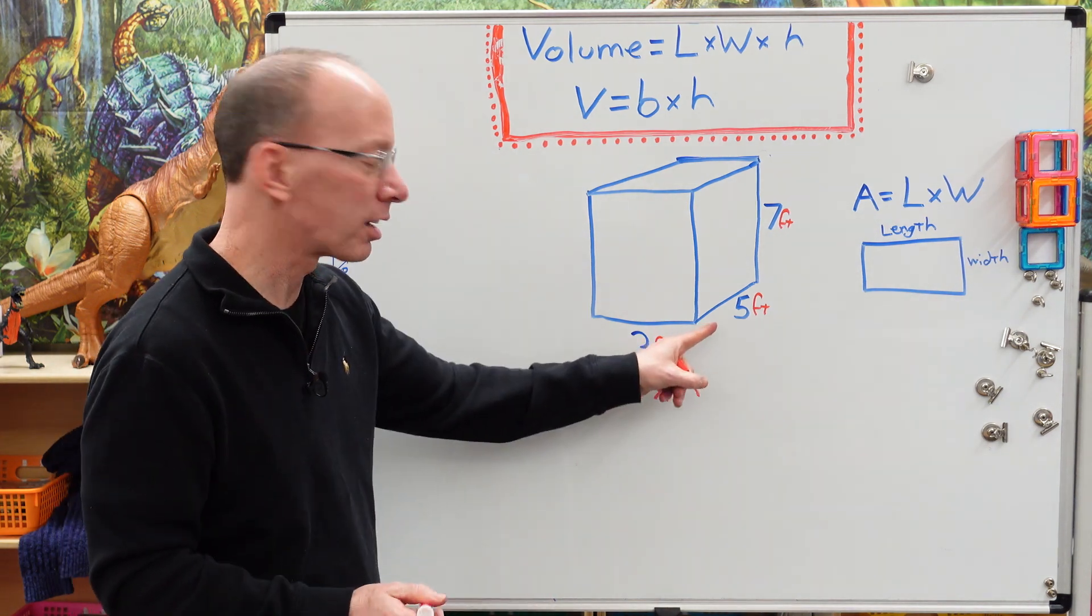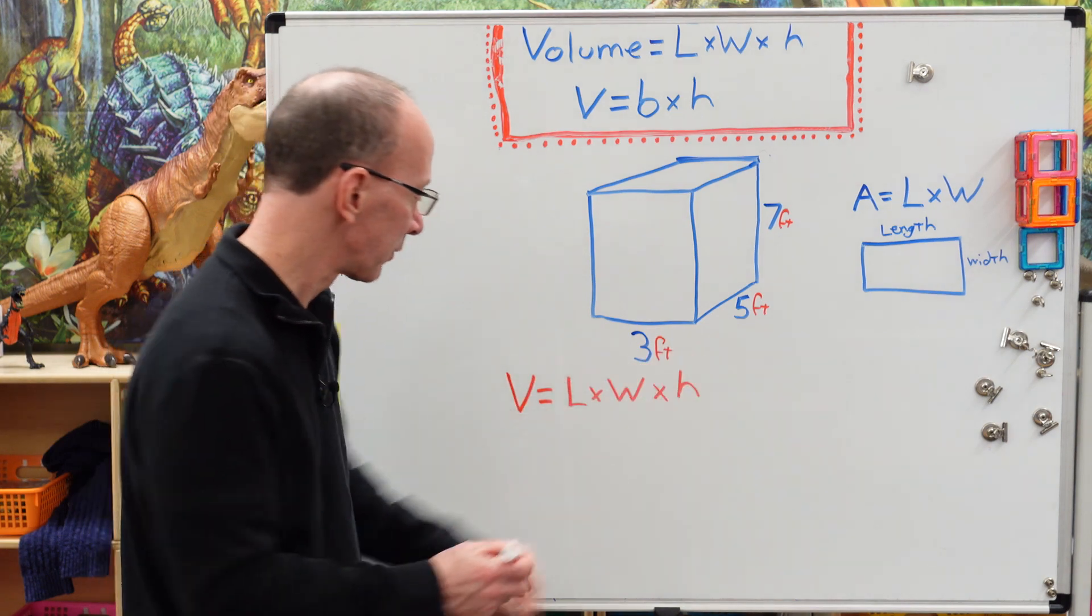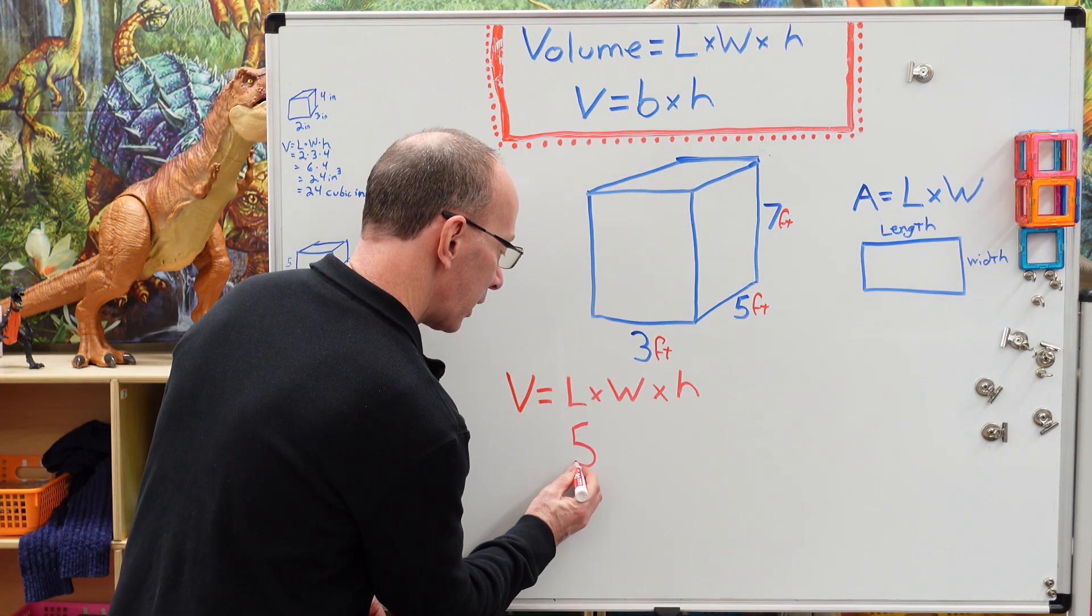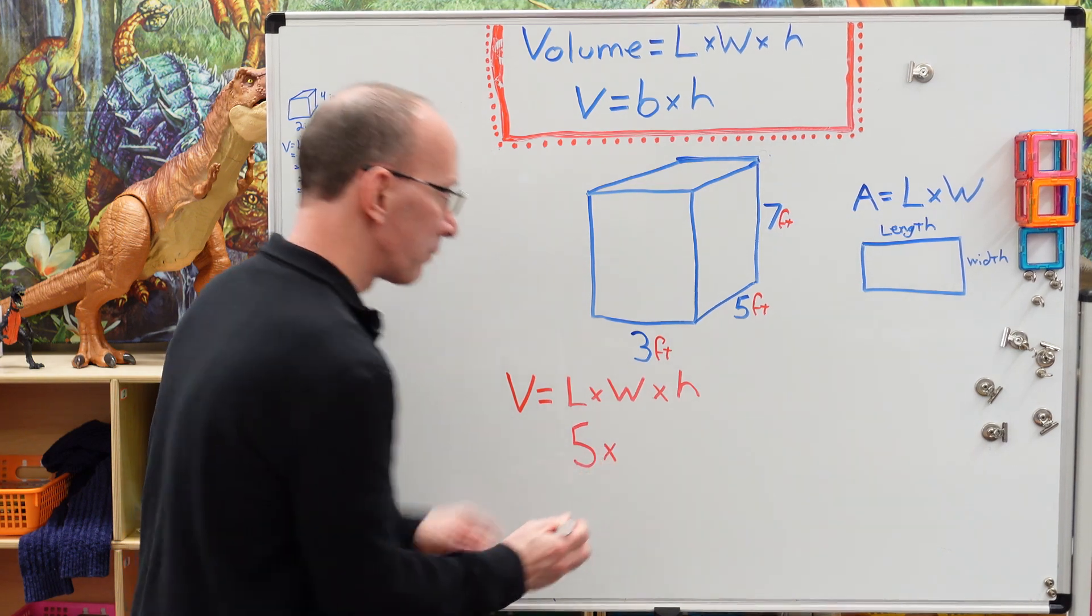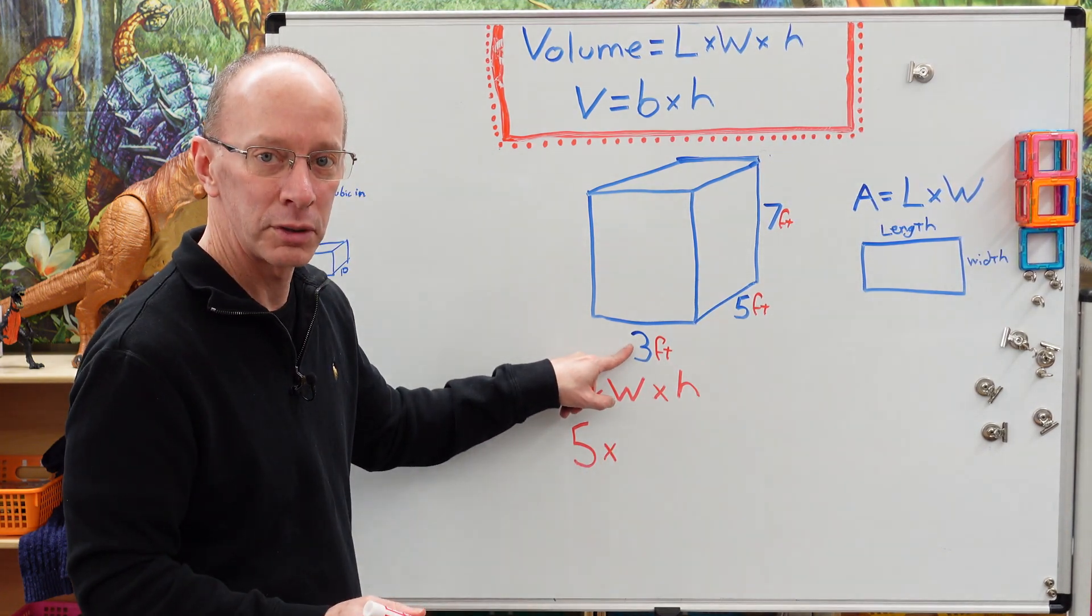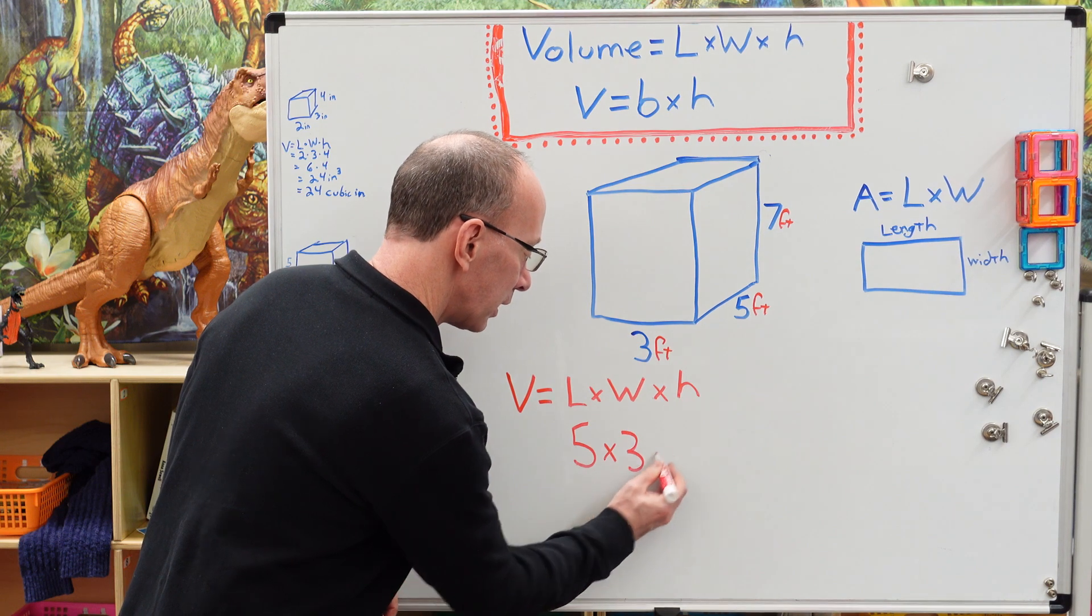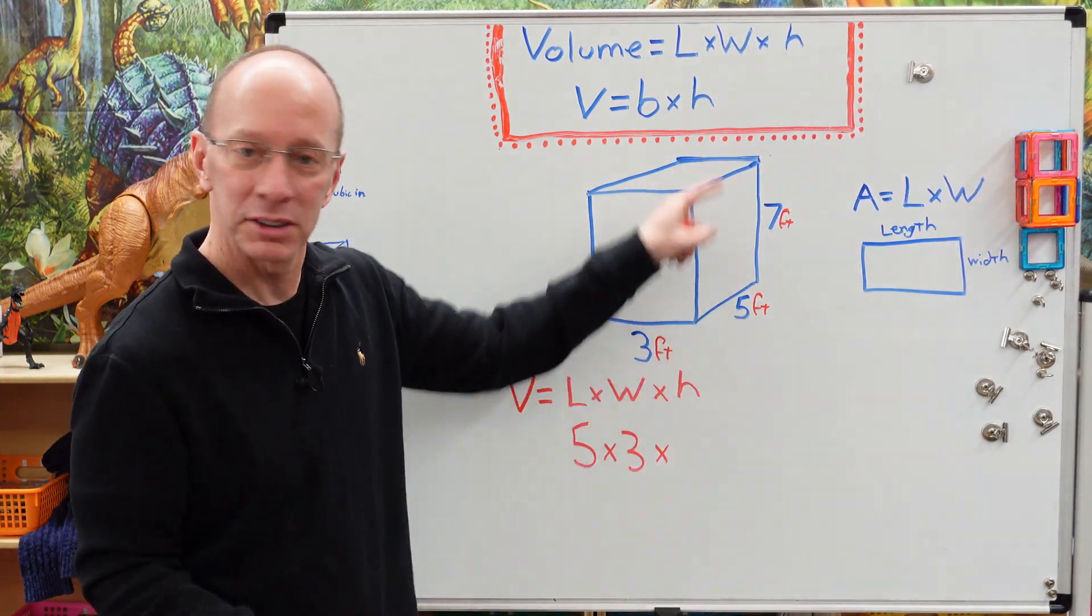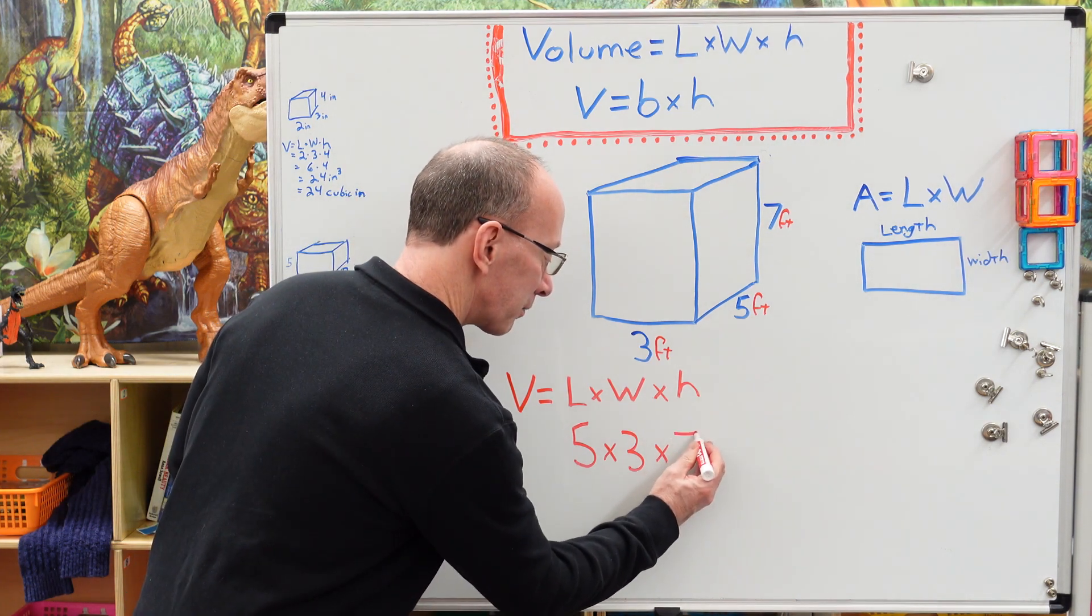So let's go ahead and take the longer side, which is going to be five feet. And I'm just going to go ahead and put five for right now. And then times our width, which would be three feet. All right. Times, and then our height. Our height is seven feet. All right, right here.